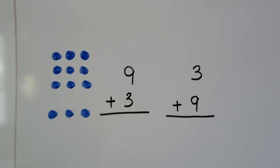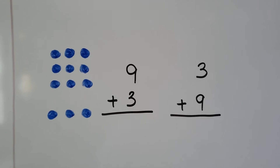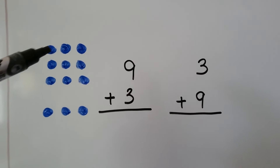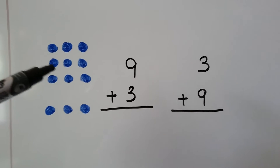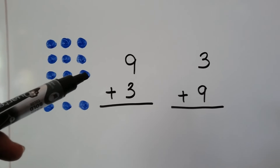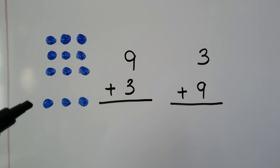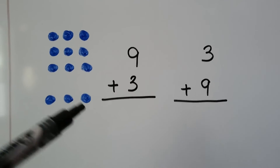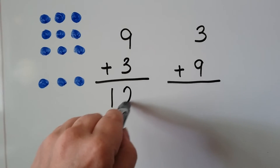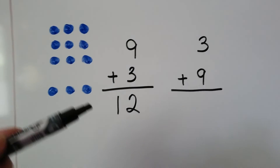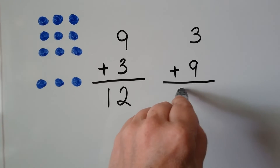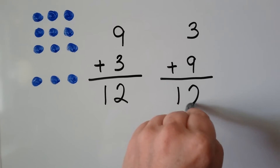Here we have nine plus three and three plus nine. Counting nine, and three more — ten, eleven, twelve. Nine plus three equals twelve, and three plus that nine is going to equal twelve.